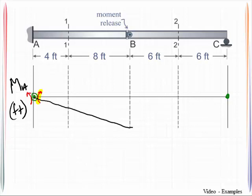Now I come down to the next release. And I know at a moment release, sometimes called a hinge, that the slope can change. And so there is no issue there if I then connect these dots back. That becomes the displaced shape.